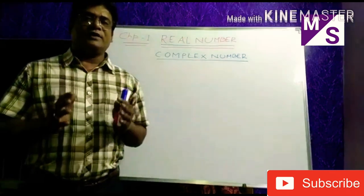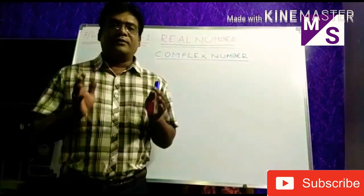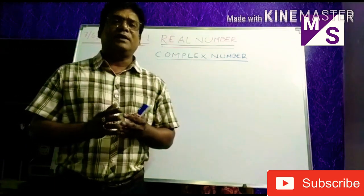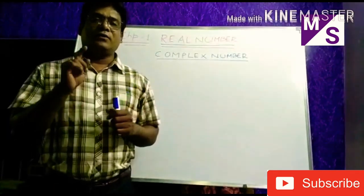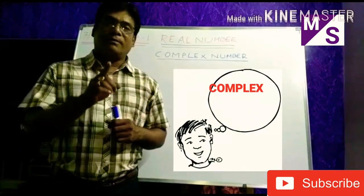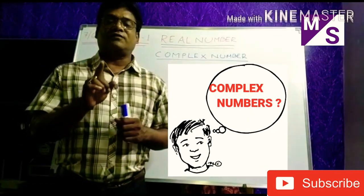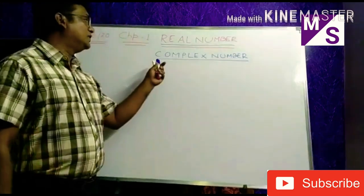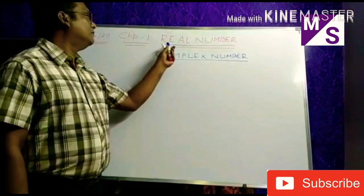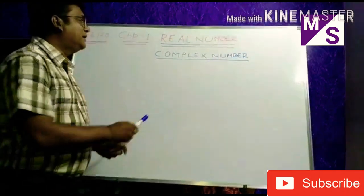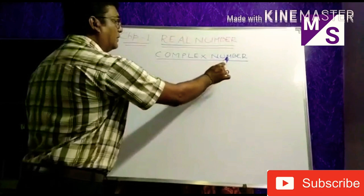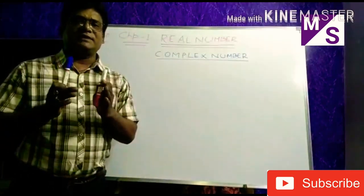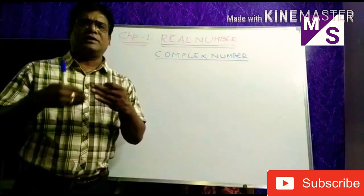When we are going to start the real number system, we start with the biggest number system, that is called complex number. My chapter number 1 heading is Real Numbers, but I wrote here complex number. Try to understand this complex number — the word complex means it is having a variety of types of numbers in it.